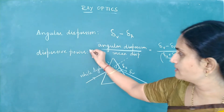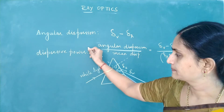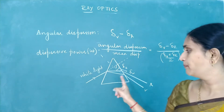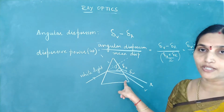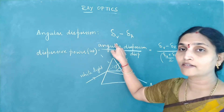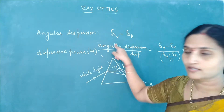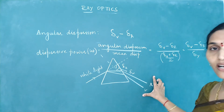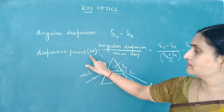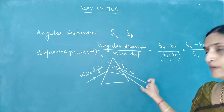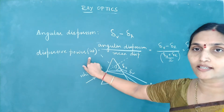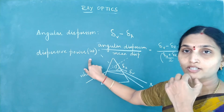Larger the value of omega, better is the dispersive nature of the prism. If delta V minus delta R is very large, there is a large spread in the colours, so dispersion is good if dispersive power is more. Dispersion will be less if dispersive power is less. These are the two definitions: one for angular dispersion and one for dispersive power.